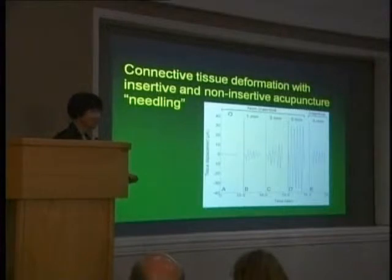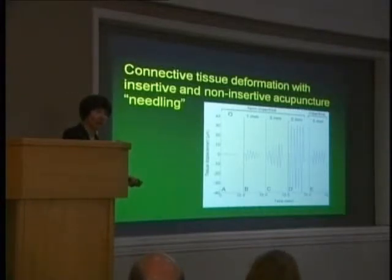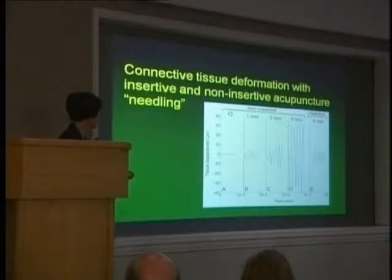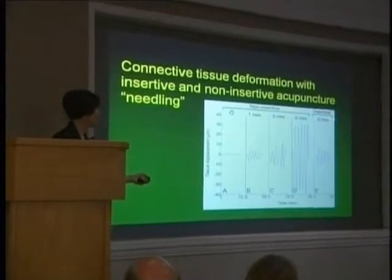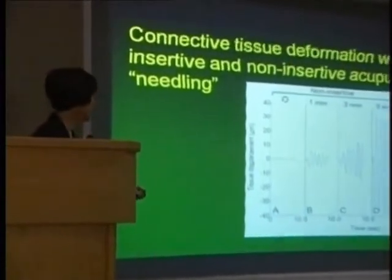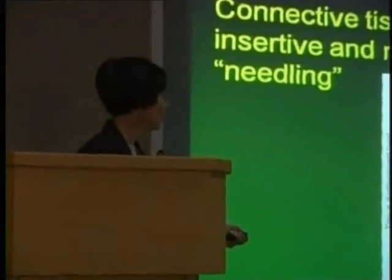So here we used a non-insertive device — essentially a needle with a cut tip — versus an inserted device. We measured, using ultrasound elastography, the tissue displacement in response to the devices at different amplitudes. For example, here the needle is simply rotated on the surface of the skin without pushing; here the needle is poked one millimeter, three millimeters, five millimeters in amplitude, up and down; and here the needle is inserted and oscillated up and down five millimeters. You see that with a non-insertive device at three millimeters of motion, you get more connective tissue displacement than with the insertive device at five millimeters. The non-insertive device is very, very effective at mechanically stimulating connective tissue. We think the reason is that the diameter of these devices is so small that the stress is concentrated in a very small area of the skin, making it very effective at transferring the force deep.